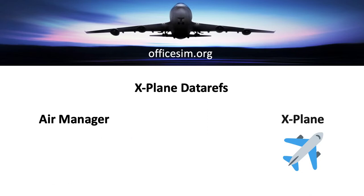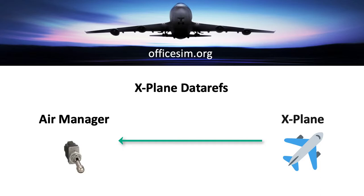The other type of data ref that X-Plane uses is what's known as a readable and writable data ref. X-Plane will send information to Air Manager and Air Manager will do something with that information. Say for example we have a light switch — X-Plane sends a signal to Air Manager saying that switch is off. Inside Air Manager we turn that switch on and it writes back to that data ref saying this switch has been turned on.